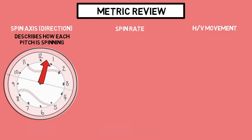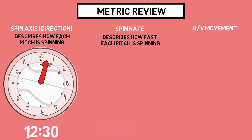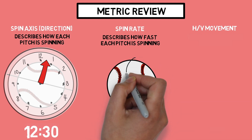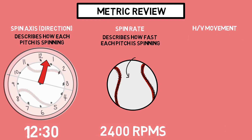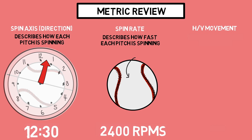This example pitch has a spin axis of about 12:30. Then we have spin rate, which measures how fast each pitch is spinning. Since we are talking about fastballs, the average major league fastball has a spin rate of 2400. We typically don't rely strictly on spin rate to make our analysis of pitches — shout out to Bauer units — but to keep today's video simple, we are going to do just that.